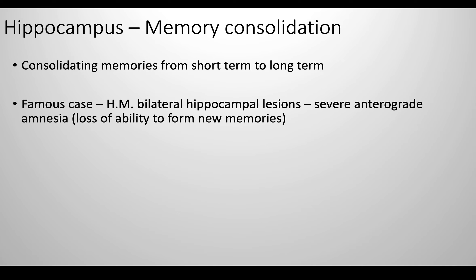Next, I'm going to talk about the hippocampus. It is notably involved in memory consolidation, especially of short-term to long-term memories. One of the most famous cases of hippocampal damage is patient HM, who had bilateral lesions and was studied by Brenda Milner. Basically, he had permanent anterograde amnesia and could not form new memories.